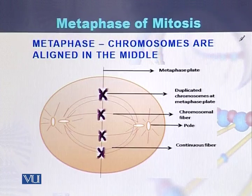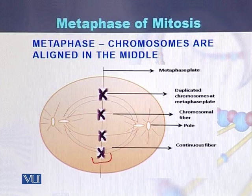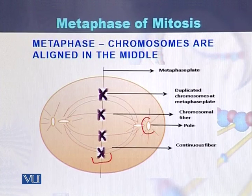In this diagram we can see that chromosomes have been aligned in the middle line. There are centrioles on the poles — centriole one and centriole two — which have taken position on both sides of the cell.